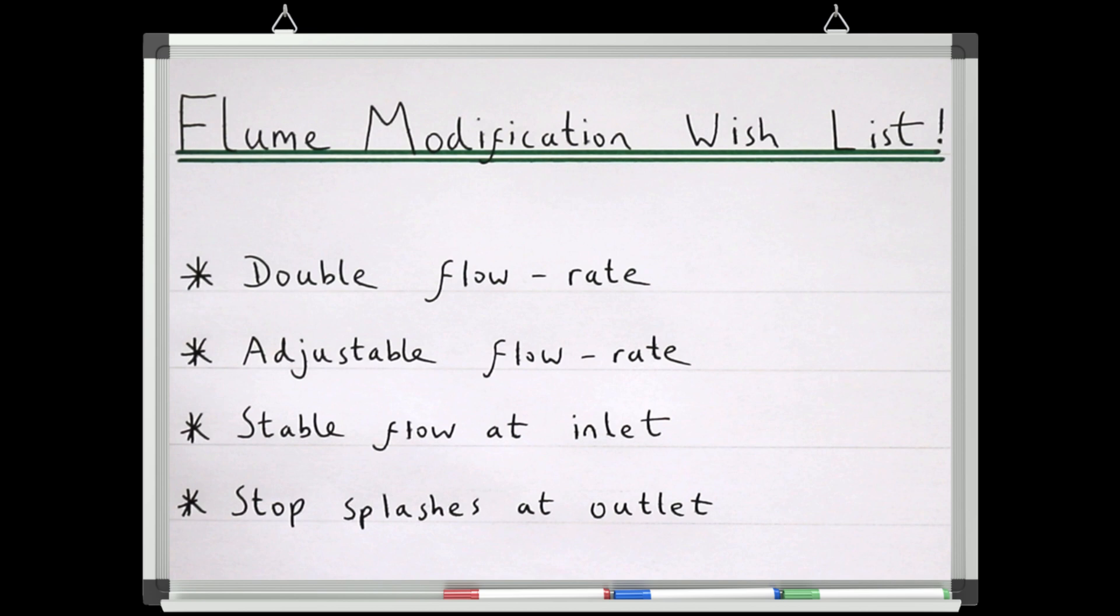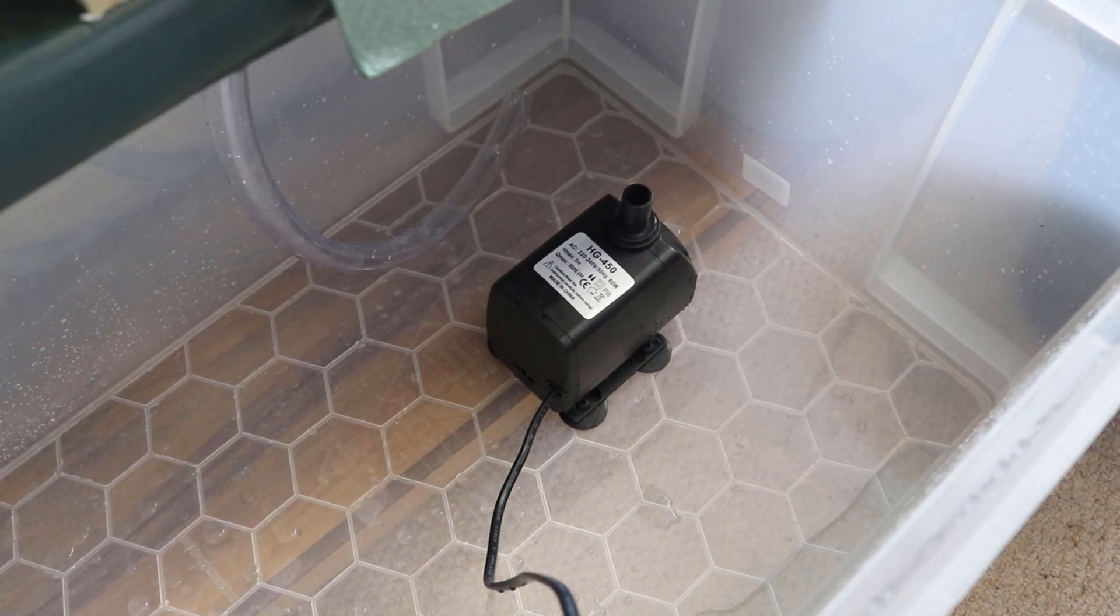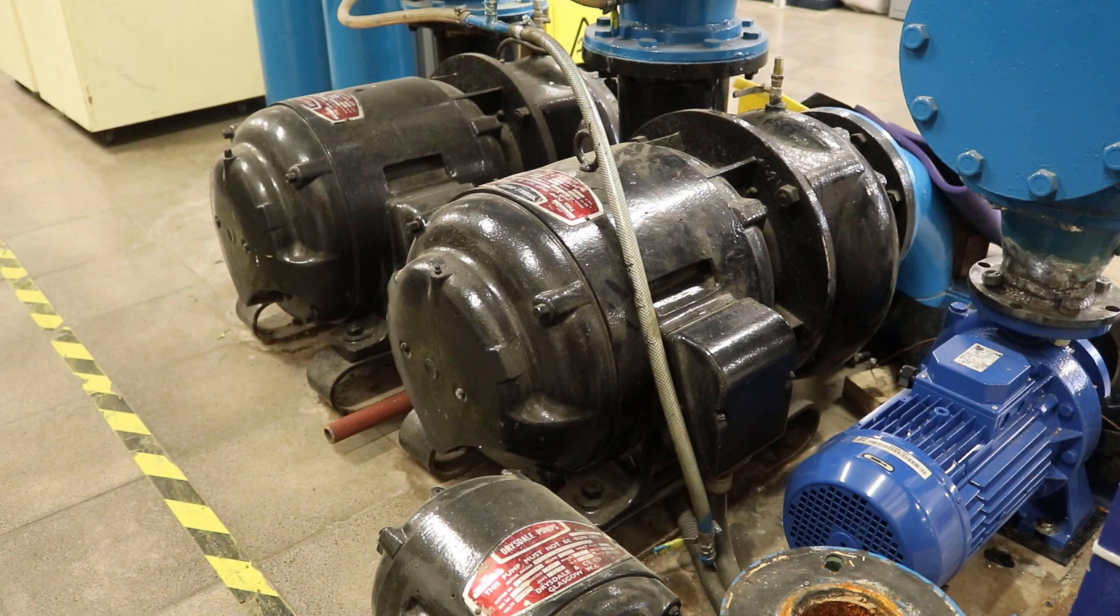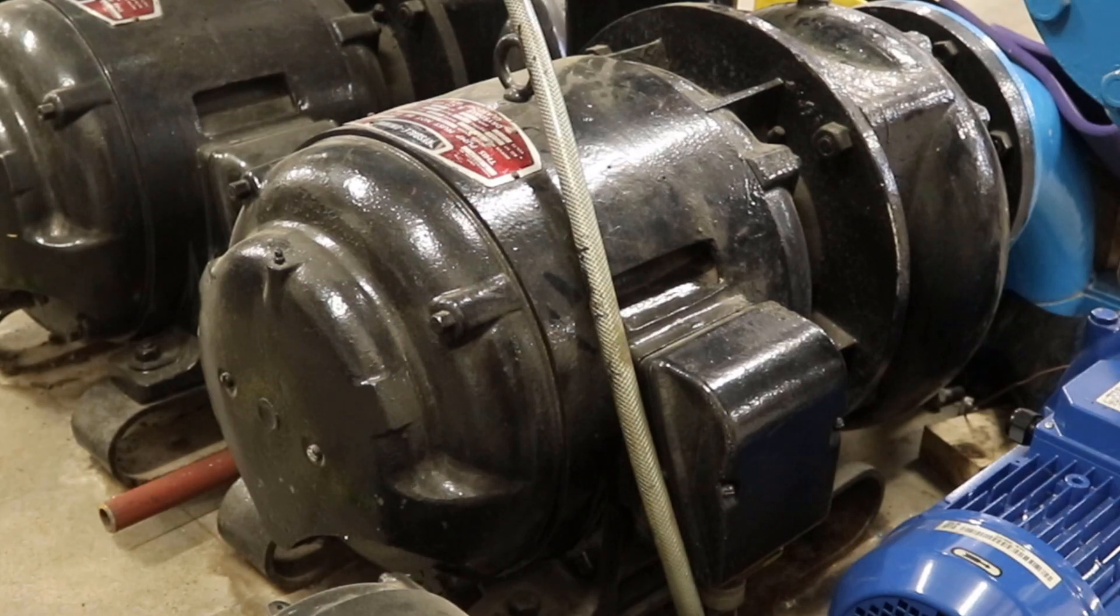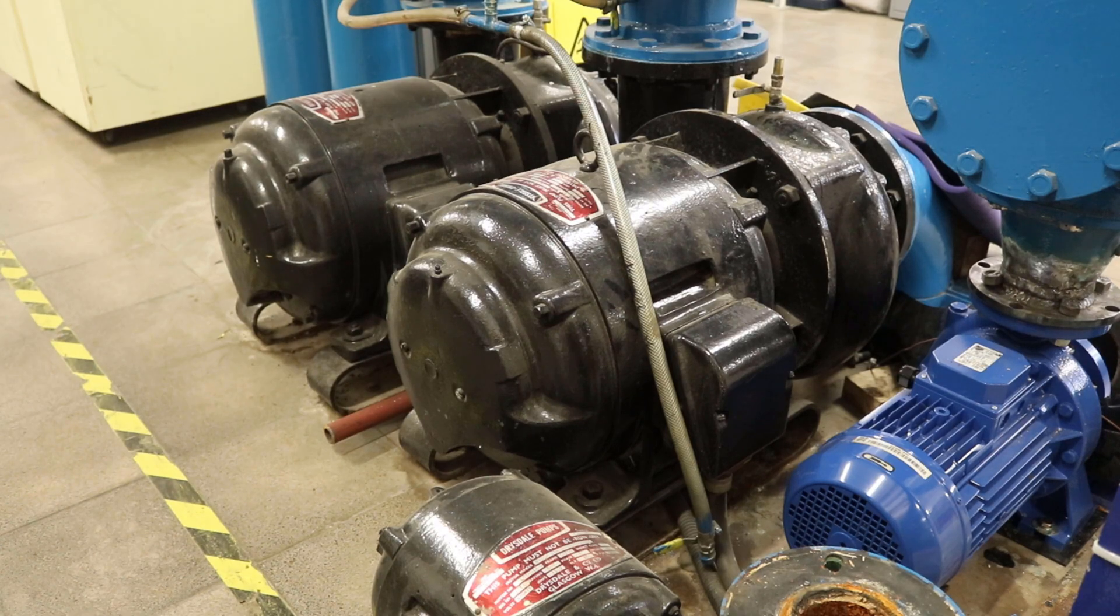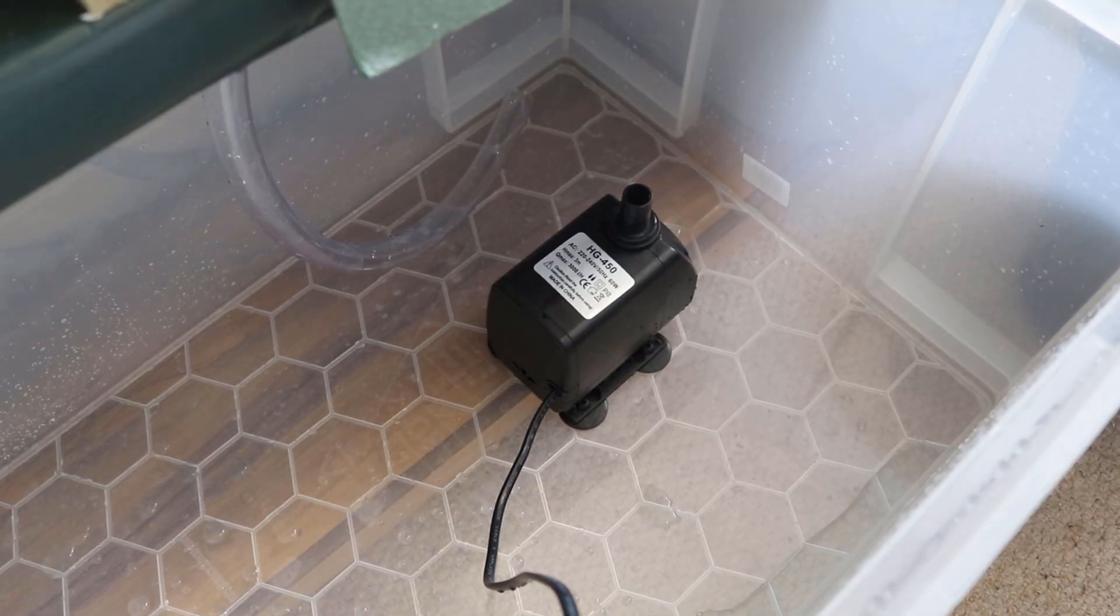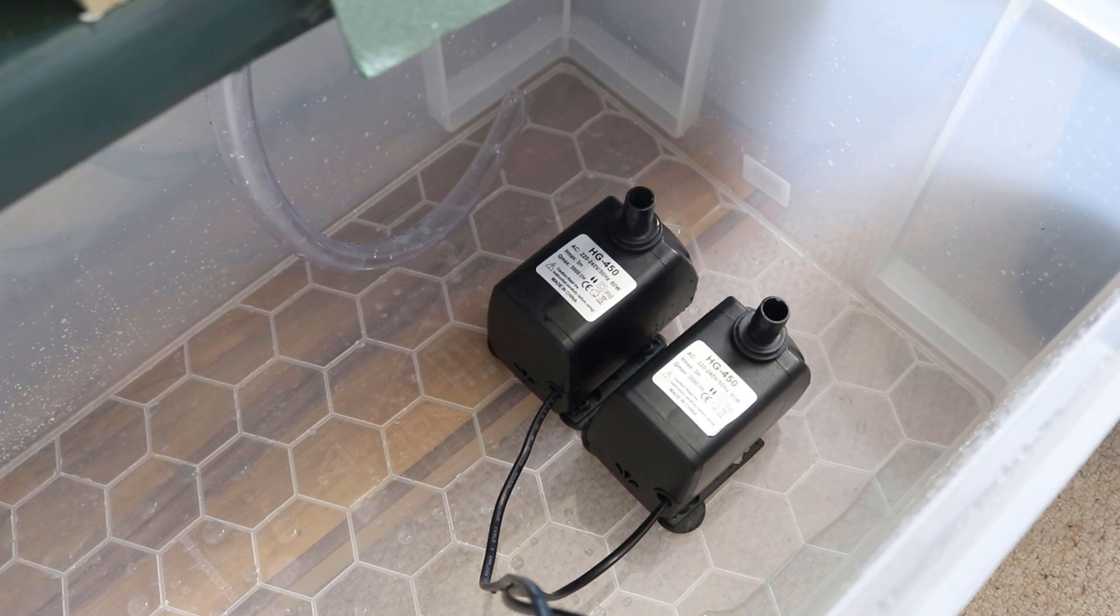So firstly we want to double the pumping power. In an ideal world I'd love to install a centrifugal pump, a bit like this one, but at the moment this is a bit beyond my budget. If this video gets 100,000 views, I'll definitely install one of these and make a video about it. But for now, the easiest way to double the pumping power of a cheap plastic pump is to use two cheap plastic pumps.